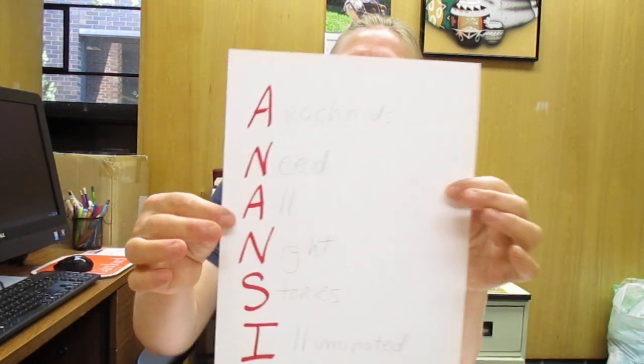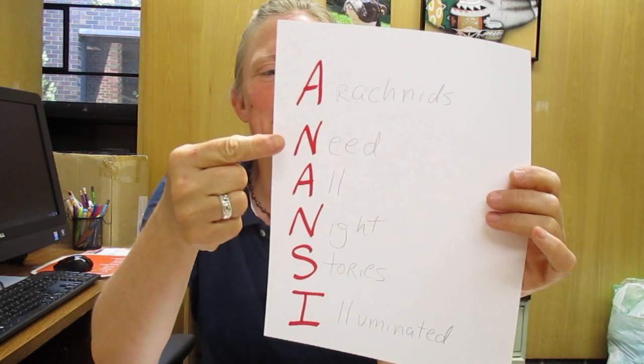I decided to do my own acrostic poem. Let's see — Anansi: A, N, A, N, S, I. I decided to come up with 'Arachnids need all night stories illuminated' — because arachnids is another word for spider. It was a first try, but you can create your own and it'll be different each time. Have fun and we'll see you again very soon!